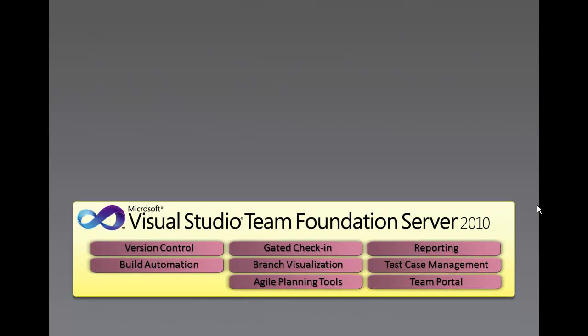Team Foundation Server is a center of gravity — it is a hub for a development team. TFS has a version control repository, test case management database, a work item tracking and change management system. It supports build automation and comprehensive reporting built on SQL Server Reporting Services. Some of the new capabilities of Team Foundation Server include support for data check-ins, range visualizations, drag and drop merge, and new agile planning tools.